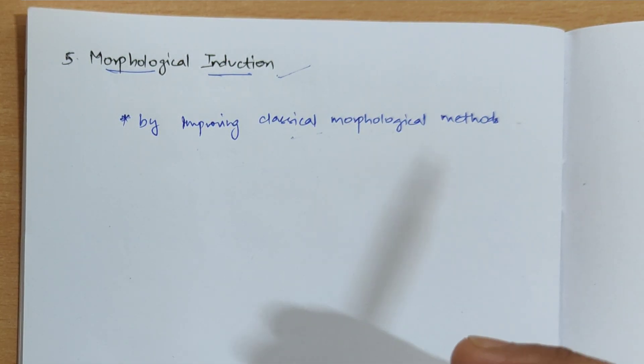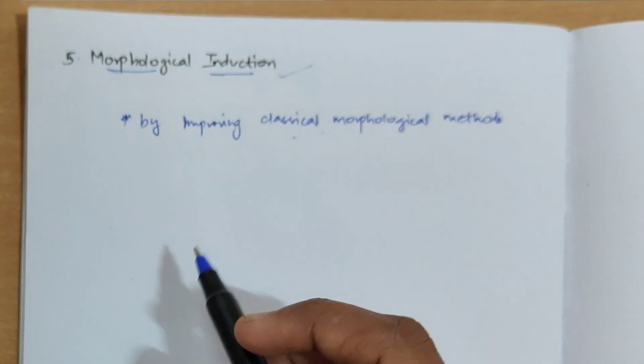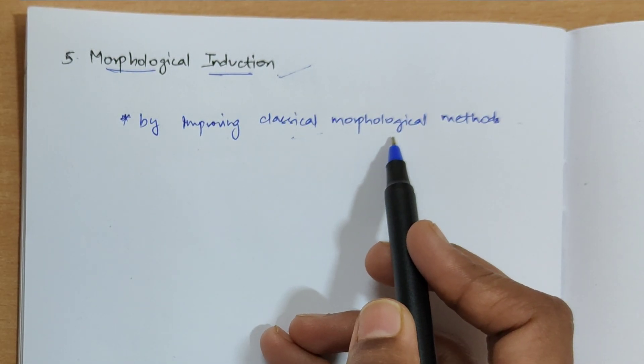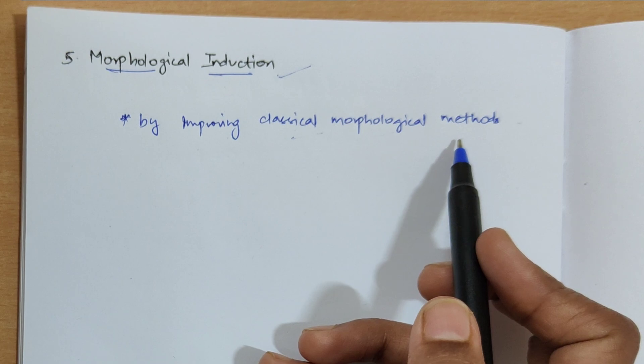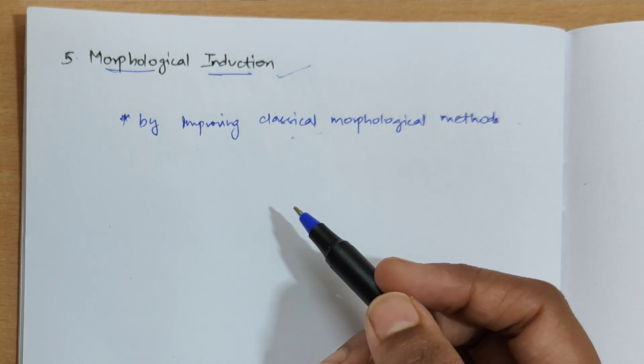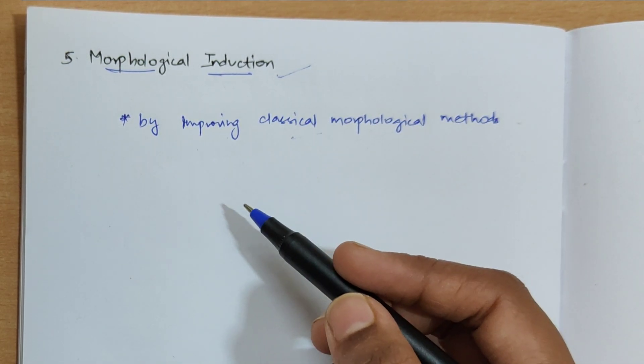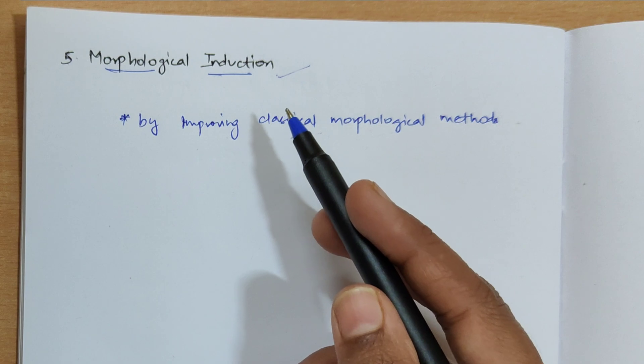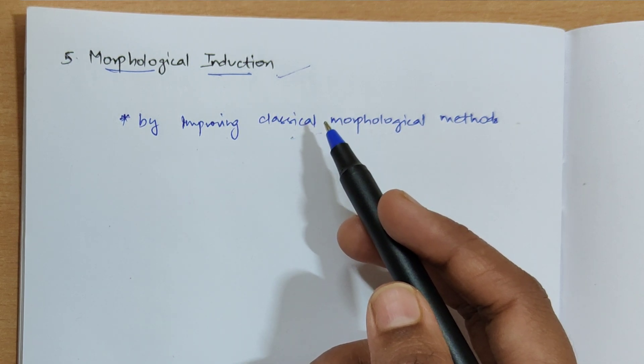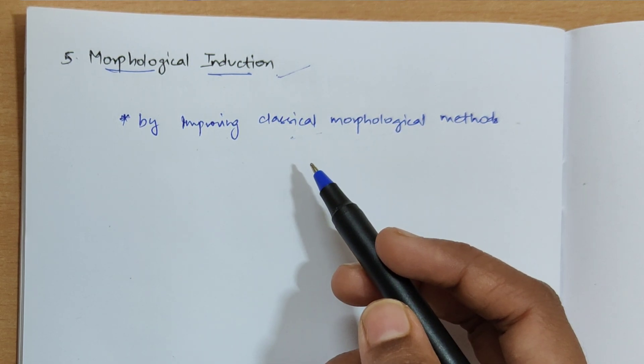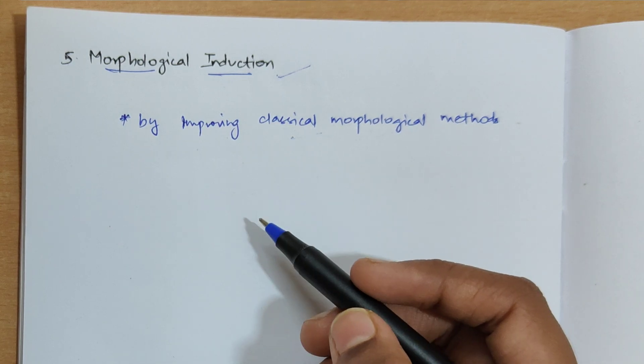All those things. So this is mainly done by improving the classical morphological methods. So there might be several ways on how a particular system automatically detects the structure of a particular word.